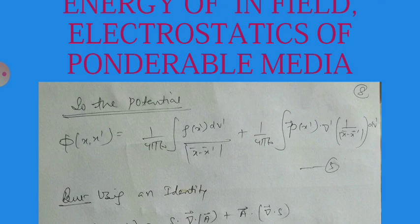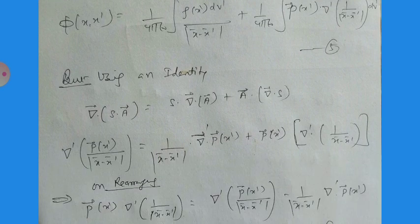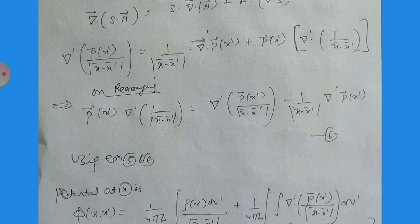We apply the vector identity: ∇·(sA) = s(∇·A) + A·(∇s). This gives: ∇'·[P(x')/|x-x'|] = (1/|x-x'|)∇'·P(x') + P(x')·∇'(1/|x-x'|). Rearranging: P(x')·∇'(1/|x-x'|) = ∇'·[P(x')/|x-x'|] - (1/|x-x'|)∇'·P(x'). Substituting this identity into the potential expression allows us to separate the terms.